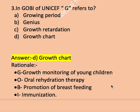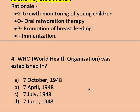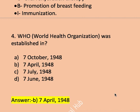Next question, question number four: WHO or World Health Organization was established in — option A 7 October 1948, B 7th April 1948, C 7 July 1948, D 7 June 1948. Right answer is B, 7th April 1948. WHO was established on 7th April 1948.